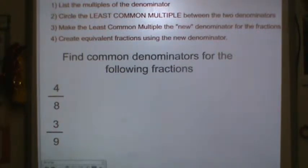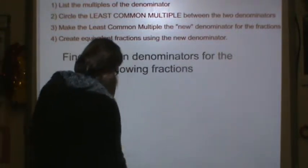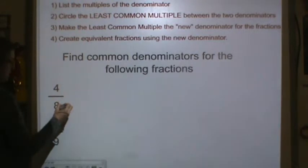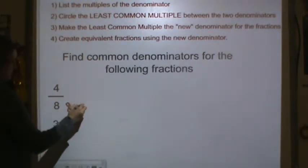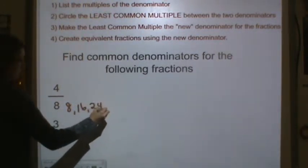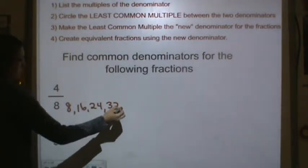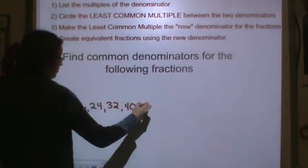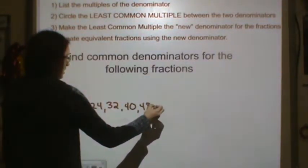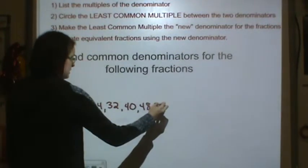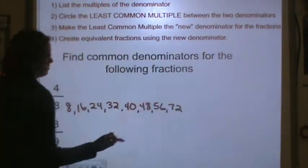All right. Again, here we go. We're going to list the multiples of the denominator. So we have 8, 16, 24, 32, 40, 48, 56, 72. We have to go a little while for this one.